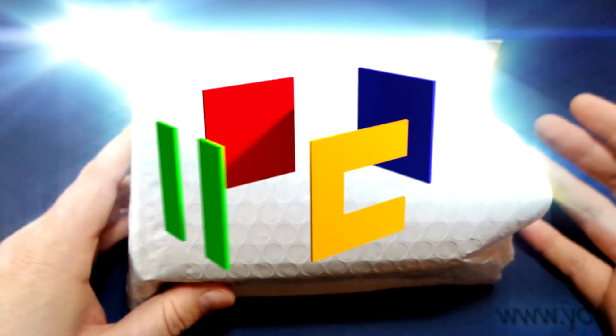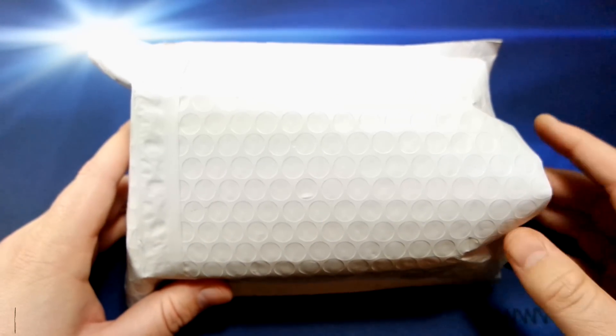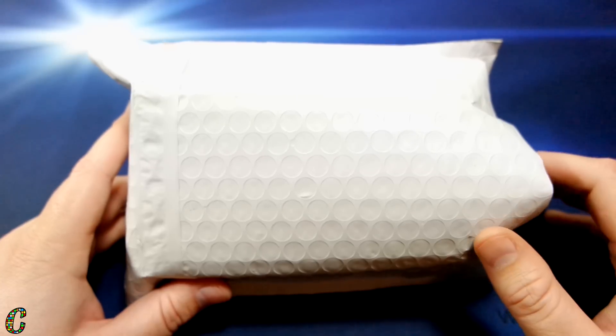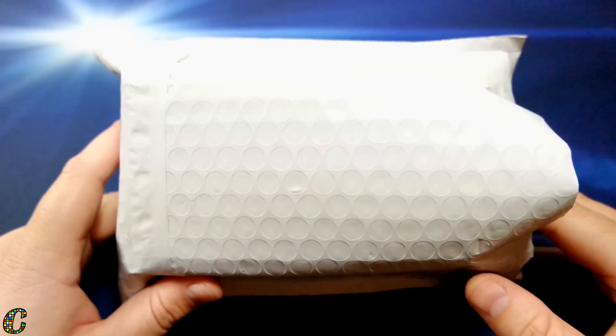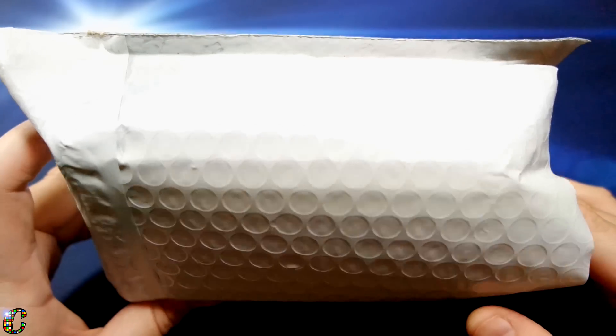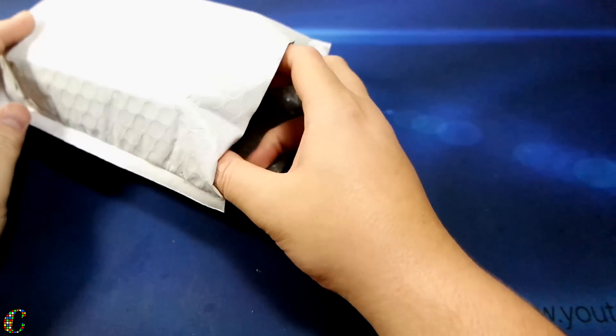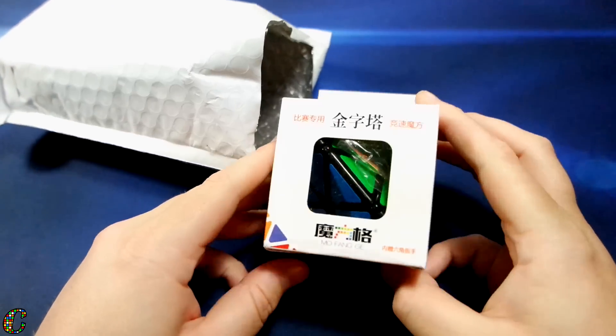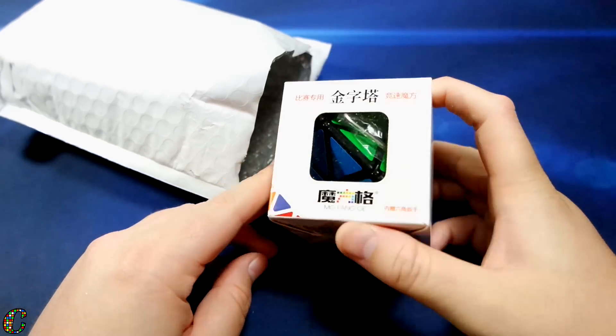What's up guys, today we've got an unboxing from thecubicle.us that I'm pretty excited about. It is the new Chi Yi Pyraminx and the new Yuxin 5x5, both of which are pretty promising. I've seen a couple videos on them, so let's get into this. Alright, so what do we have first here? It looks like the Chi Yi Pyraminx.